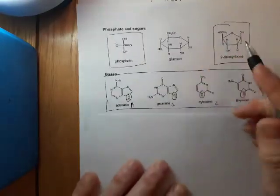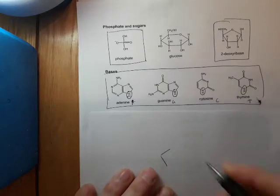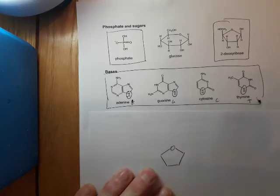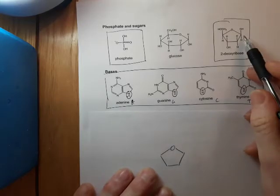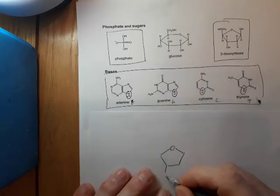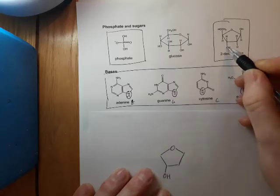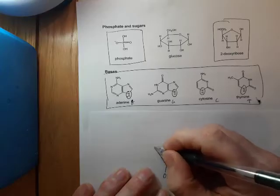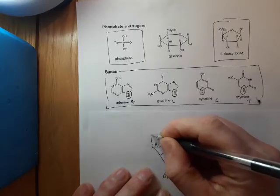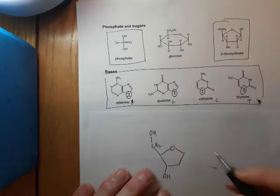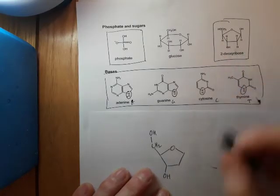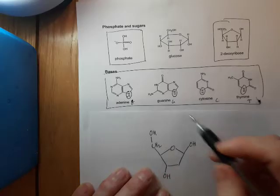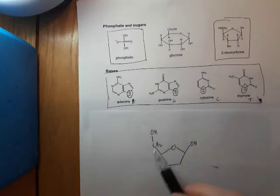So I'm going to take the sugar first and draw it. That's a pentagon with an oxygen at the top. It goes H, H — so nothing there. This position has got an OH, so I'll draw that as OH. This one has got an H and a CH2OH — it's quite important to realise it's CH2 and then an OH. This side is just H's, and up here we have an OH and an H.